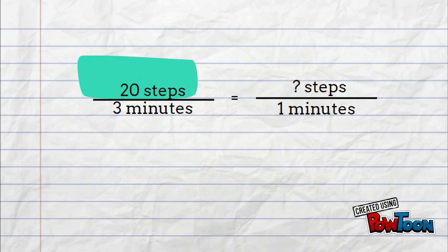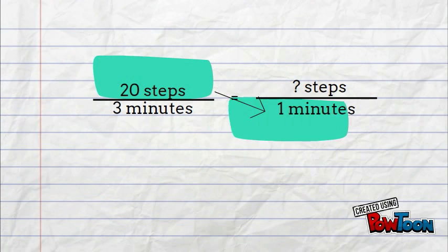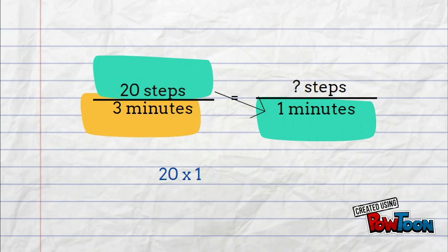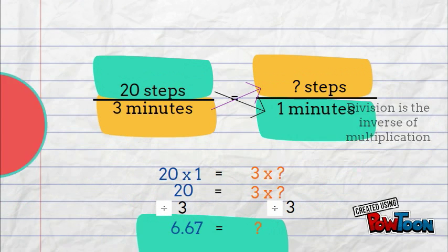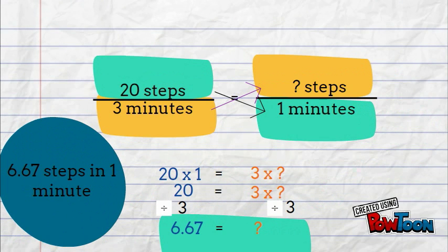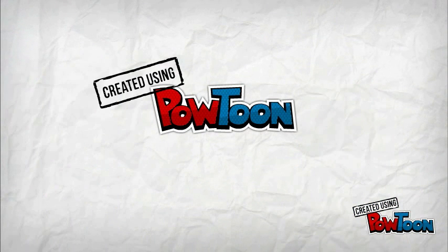Let's cross multiply to solve. We have 20 times 1, and 3 times our unknown. We'll do the math that we can. And now we have 3 times what equals 20. We have to divide by 3 to get 6.67 steps in 1 minute.